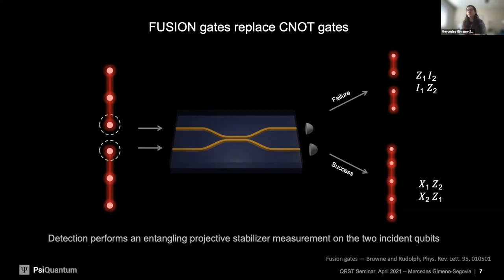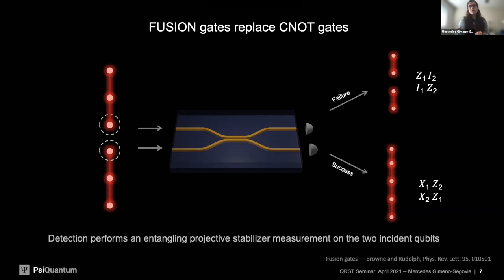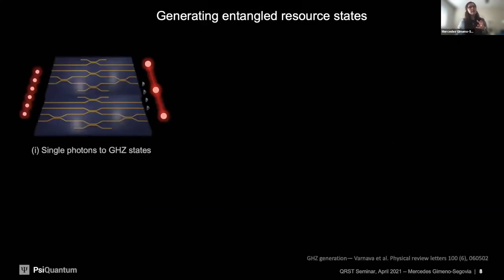There is flexibility in choosing passive operations to determine exactly what stabilizer operation you perform on your state. You can interpret failure of a gate — for example in a type two gate — as the erasure of some stabilizer information. Erasing stabilizer information is something error correcting codes are well prepared to handle. This is the fundamental entangling operation in linear optics: a passive interferometer followed by measurement. We can apply the same principle to generate entangled states — such as three-qubit GHZ states — from single photons.